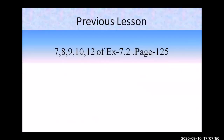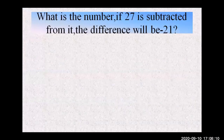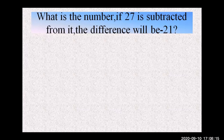In the previous lesson, we already solved questions 7, 8, 9, 10, and 12 of Exercise 7.2, page 125. Today I will give you a math problem to solve yourself first. What is the number if 27 is subtracted from it and the difference will be minus 21? Now solve yourself, then check your answer.